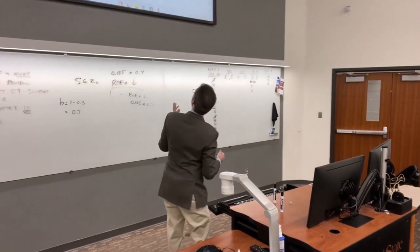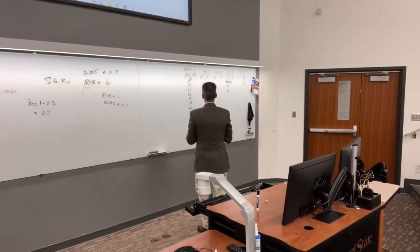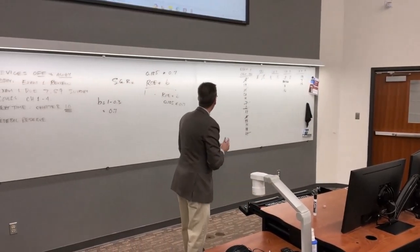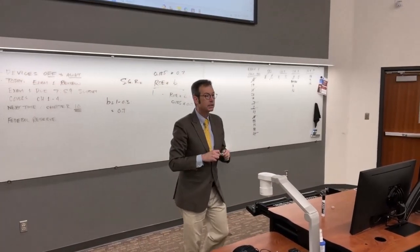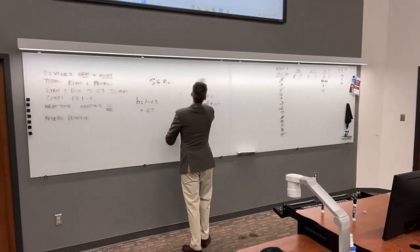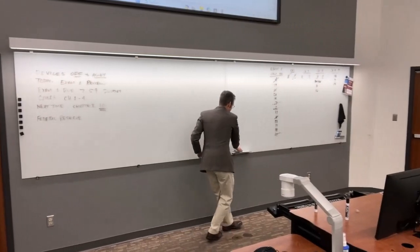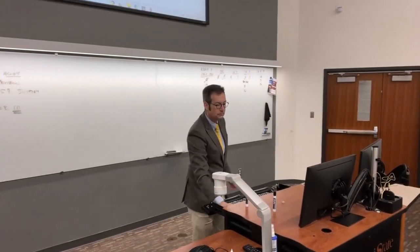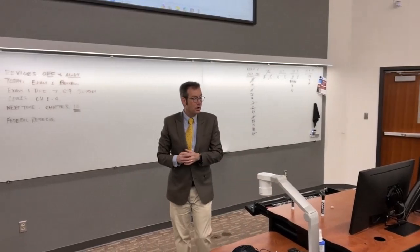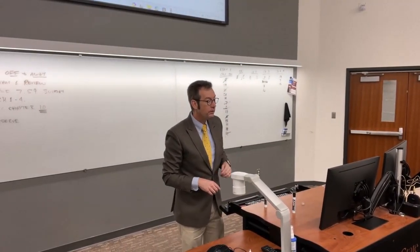That was number 12. Now we're on to number 14. A firm reported a profit margin of 7.5%, total asset turnover of 1.5 times, a debt-to-equity ratio, a net income of $550,000, and dividends paid to common shareholders of $100,000. The firm has no preferred stock. What's the firm's internal growth rate?